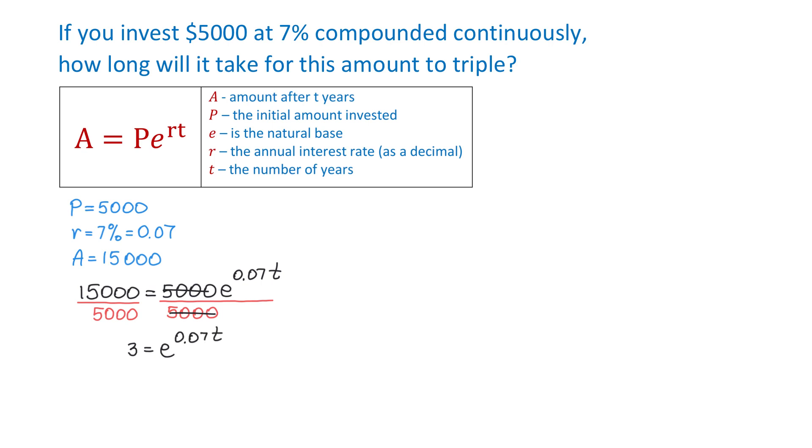In the next step, we will take the natural logarithm on both sides. Then we will have natural logarithm of 3 equals natural logarithm of e to the power of 0.07t.